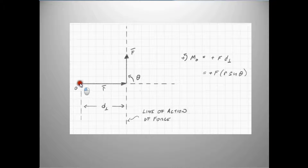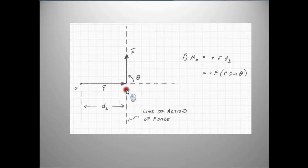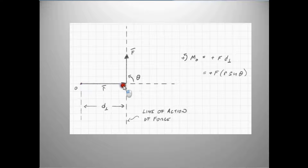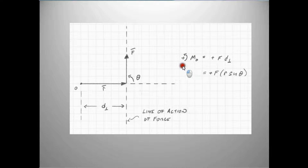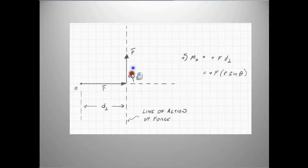Another way of taking it is that we drop a line from point O that is directly perpendicular to the line of action of the force. In this particular case, that's going to be D perpendicular, and D perpendicular is the exact length of the position vector. We're going to calculate moments that act in the counterclockwise direction as being positive, so in this particular case it's going to be plus F — the magnitude of F — times the perpendicular distance.